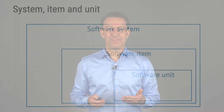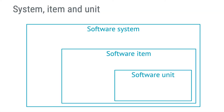Let's start talking about a group of three terms. They often cause discussion and sometimes even confusion. I'm talking about software system, software item, and software unit. You would, for example, use these terms when you are working with software architecture design. Software item is also frequently used when working with software risk management.